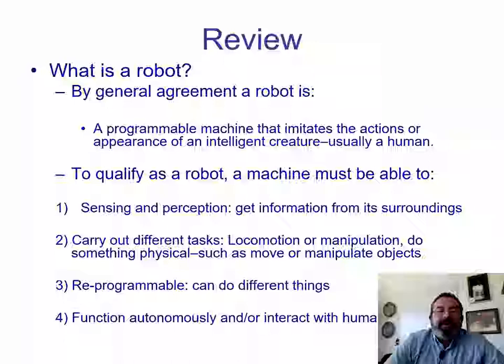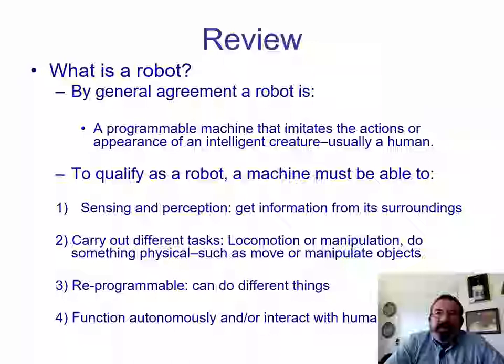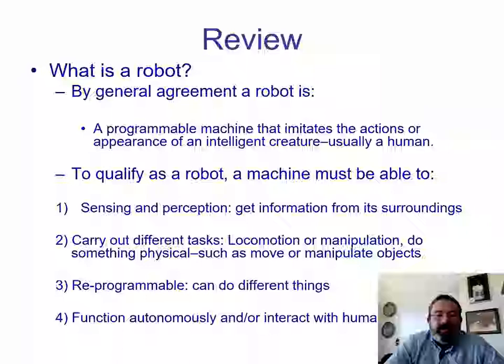First of all, what is a robot? By general agreement, we know that a robot is a programmable machine which imitates actions of an intelligent creature, usually a human, but not only humans. Remember that we have seen robots behaving like snakes or behaving like another kind of animal. So to qualify as a robot, a machine must be able to have sensing and perception, because we need to get information from its surroundings. Then it should be able to carry out different tasks like locomotion or manipulation, or do something physical such as move or manipulate objects.